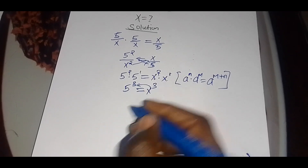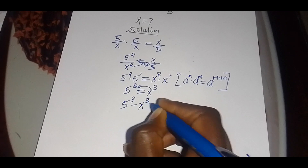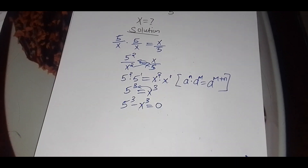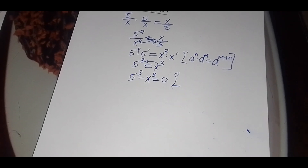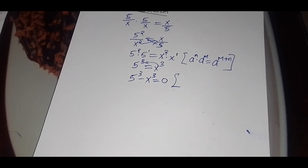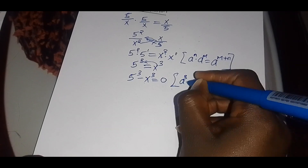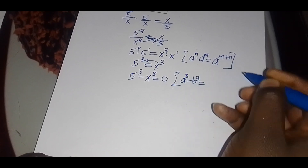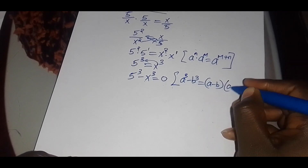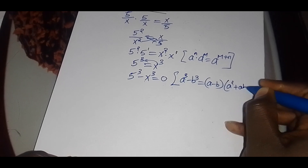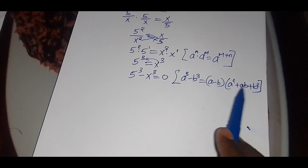We take x cubed to the left-hand side, so we have 5 cubed minus x cubed equals 0. What we have formed here is the difference of cubes, which is expressed as a cubed minus b cubed equals a minus b, multiplied by the bracket a squared plus ab plus b squared.